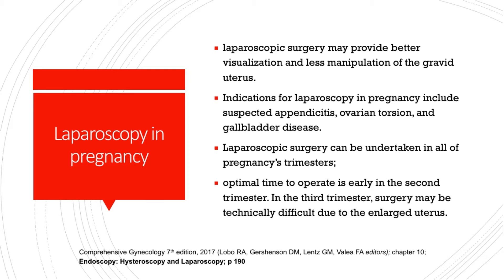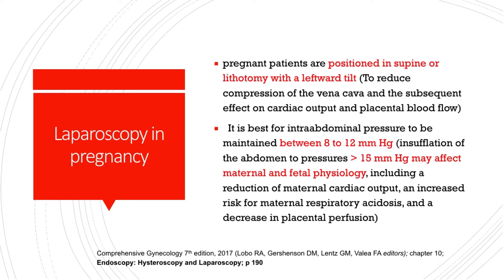Laparoscopy can be performed even during pregnancy. Laparoscopic surgery may provide better visualization and less manipulation of the gravid uterus. Indications for laparoscopy in pregnancy include suspected appendicitis, ovarian torsion, and gallbladder disease. Laparoscopic surgery can be undertaken in all trimesters; however, the optimal time to operate is early in the second trimester. In the third trimester, surgery may be technically difficult due to the enlarged uterus. Pregnant patients are positioned supine or in lithotomy with a leftward tilt to reduce compression of the vena cava and its effect on cardiac output and placental blood flow.